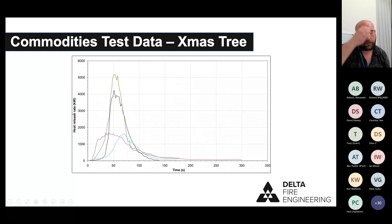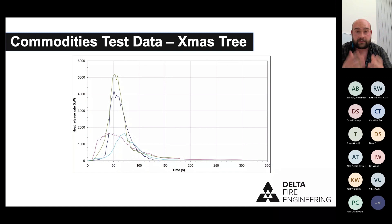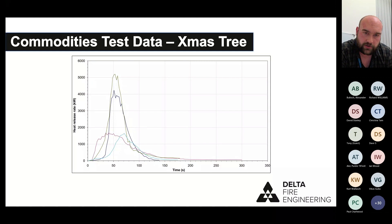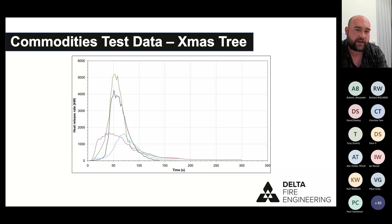It is now November, which means the festive season is nearly upon us and everyone will be sharing the Christmas tree fire video on LinkedIn. I include this because it's part of the commodities test. Note the time axis is in seconds, not minutes — one particular sample reached 5 MW after just 50 seconds, which is the same size as an entire living room fire. Live Christmas trees, once cut and dried out, are incredibly combustible.